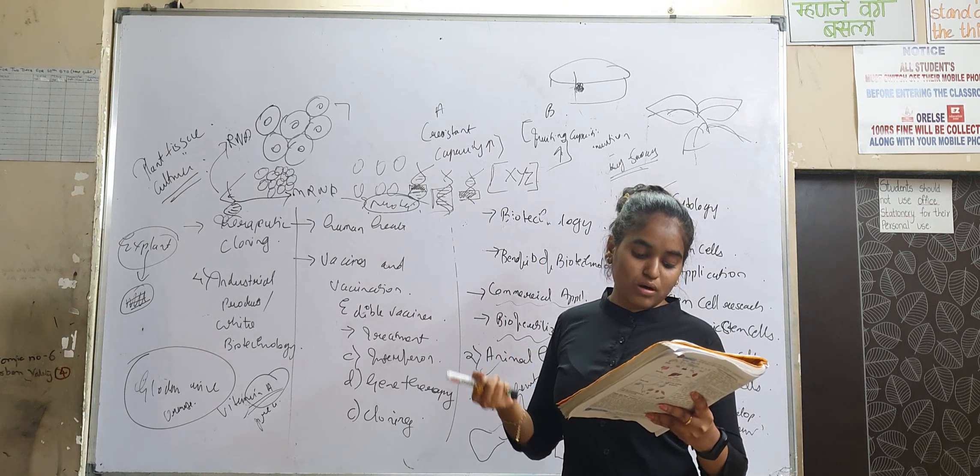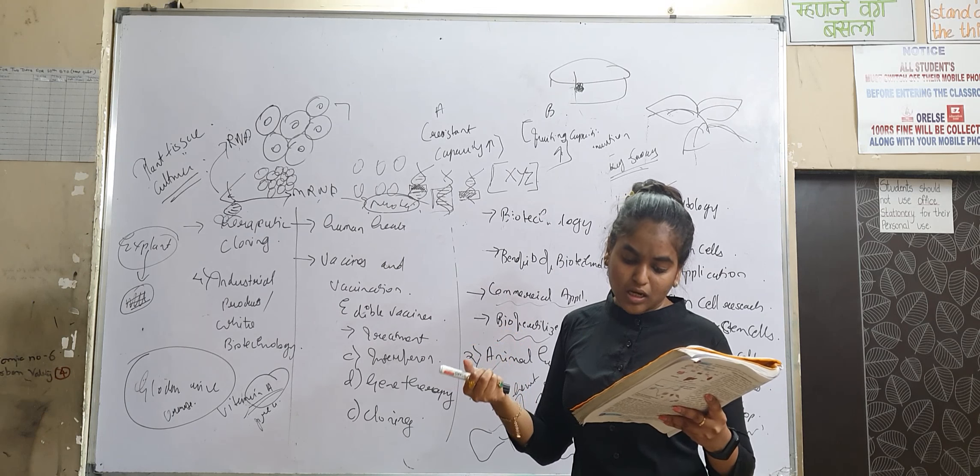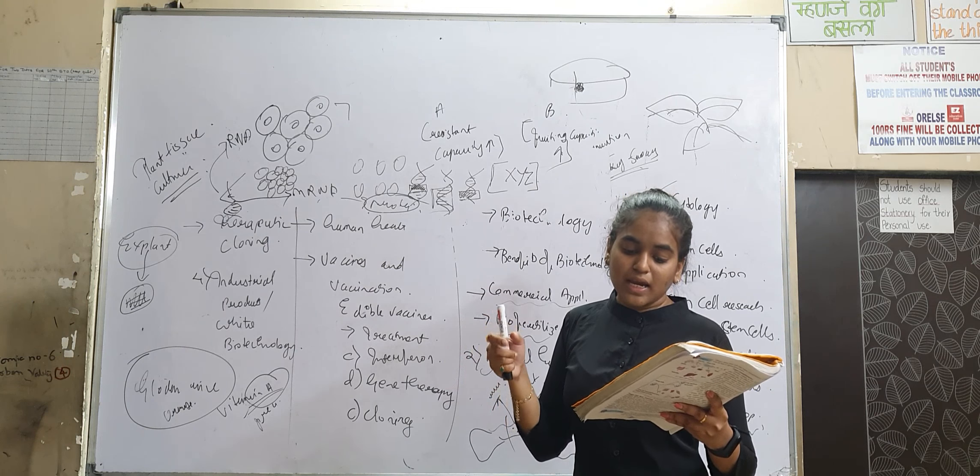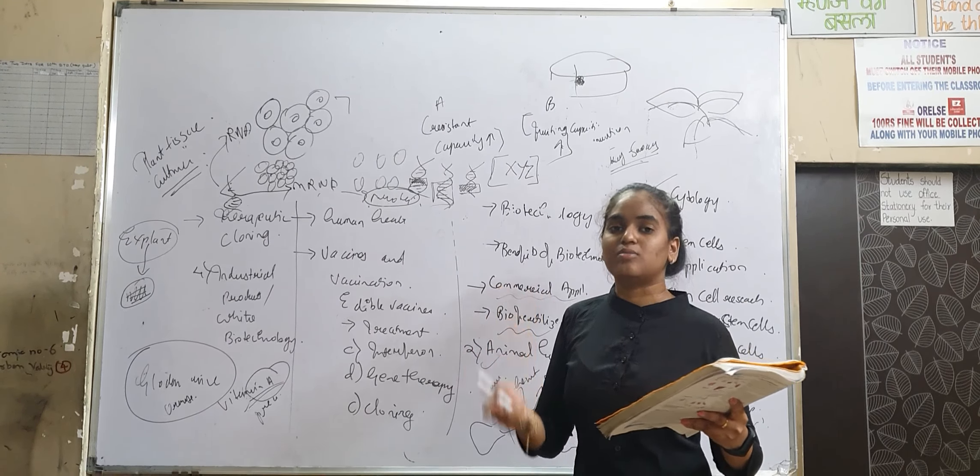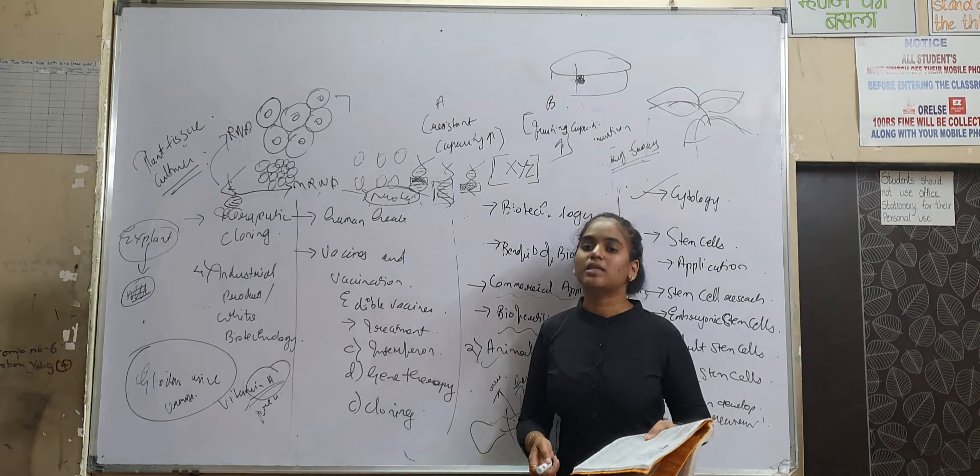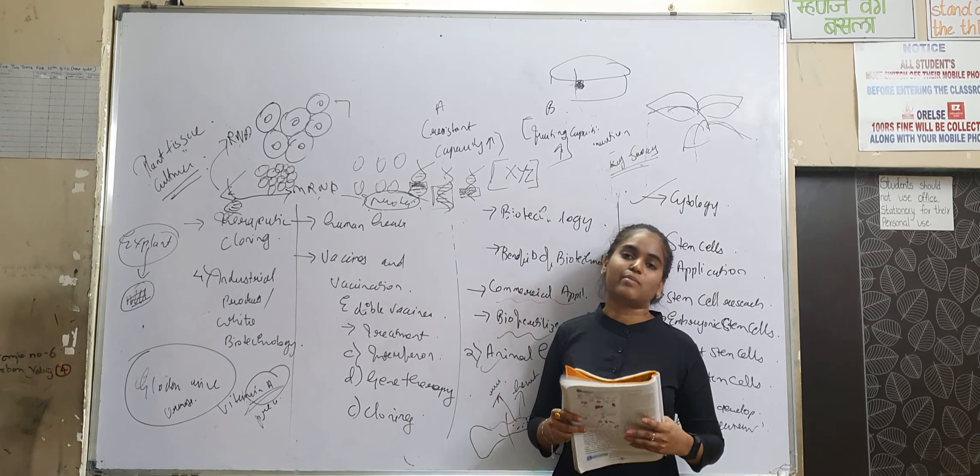Then due to development of fast fruiting varieties, per annum production has been increased. What does this mean? If fruit capacity development time period is 4 months...